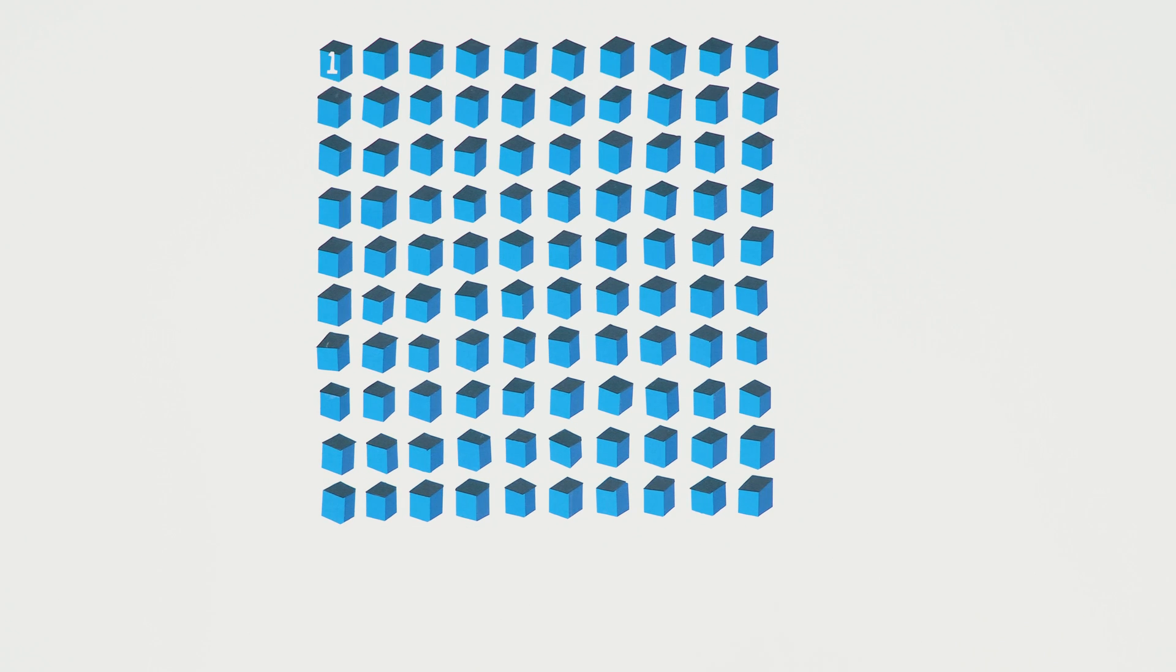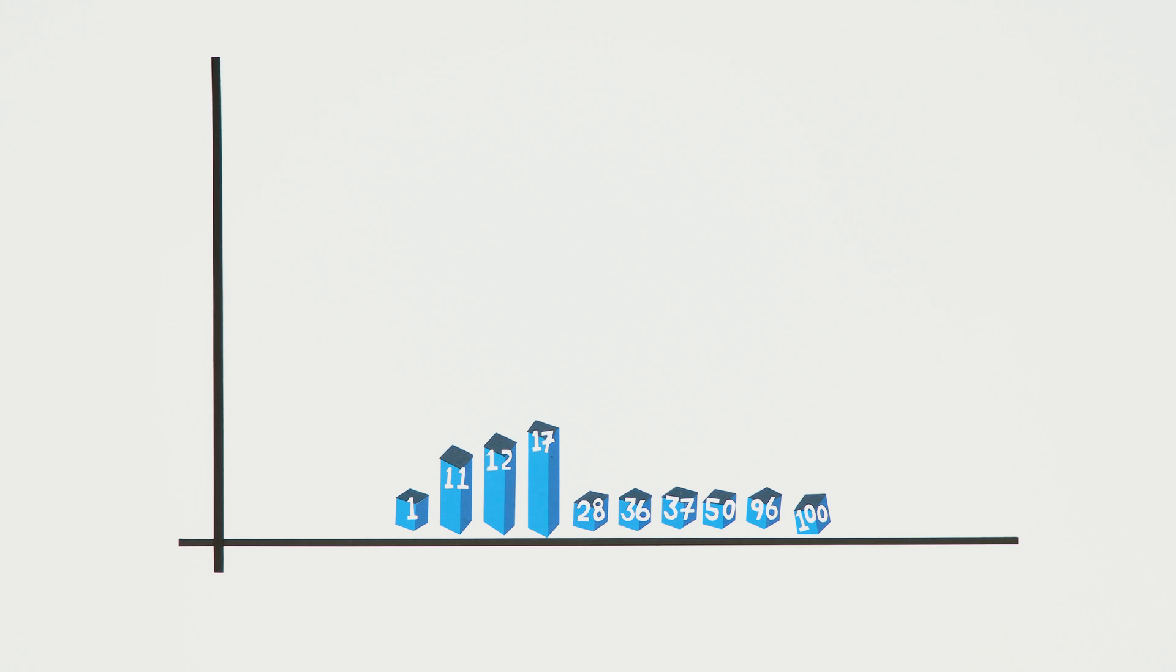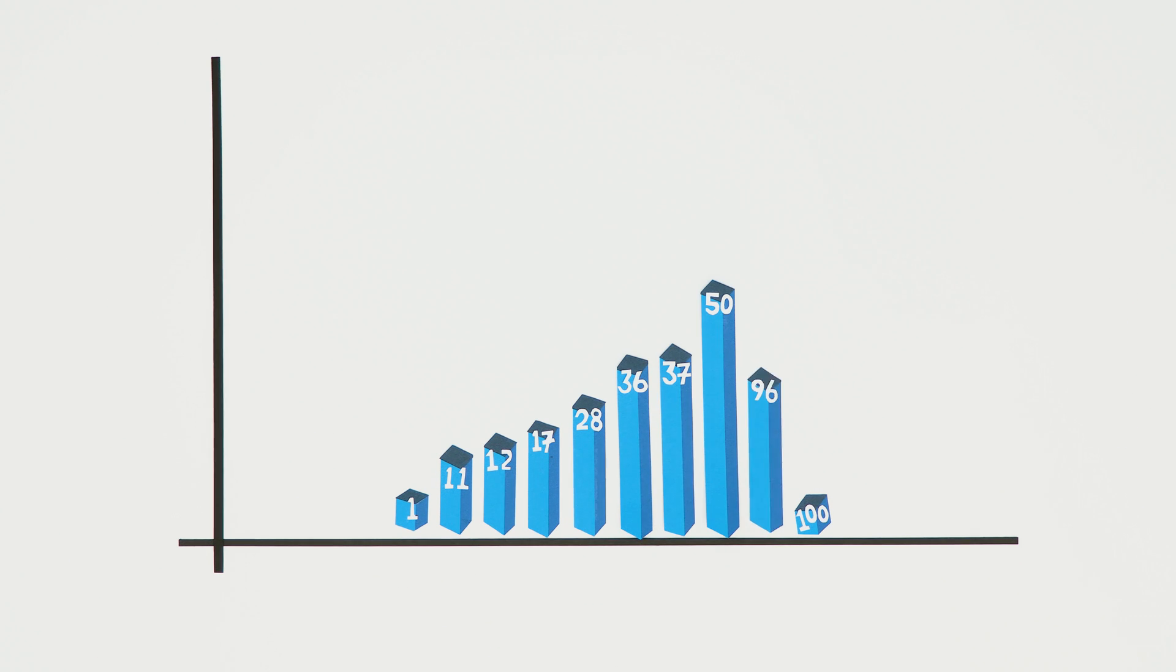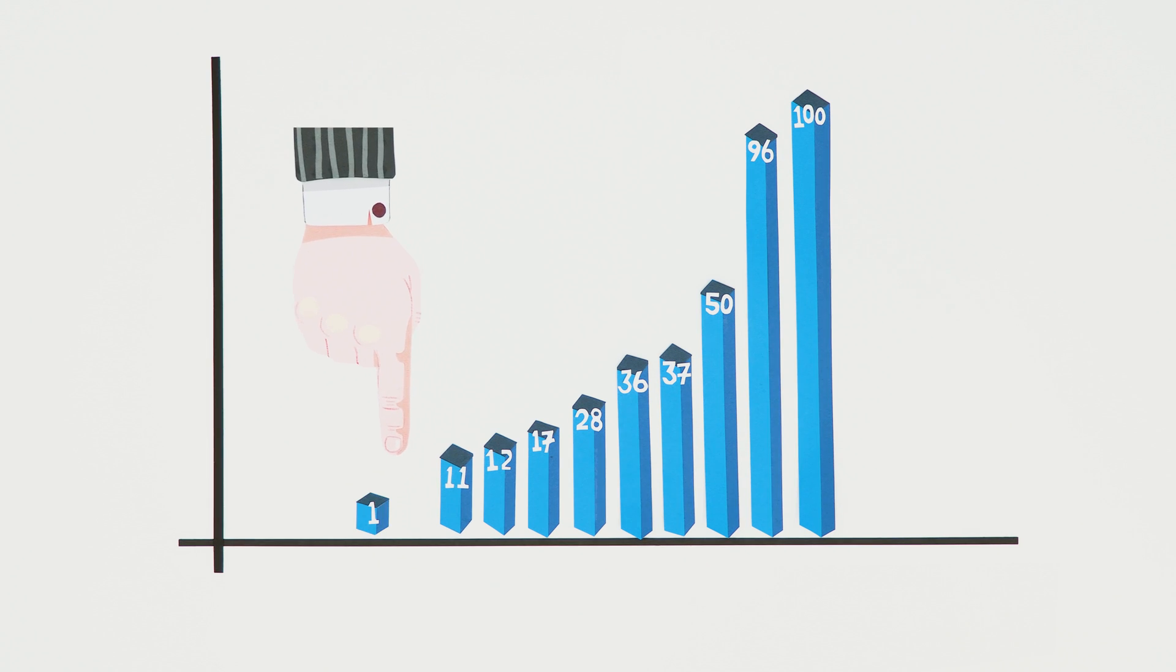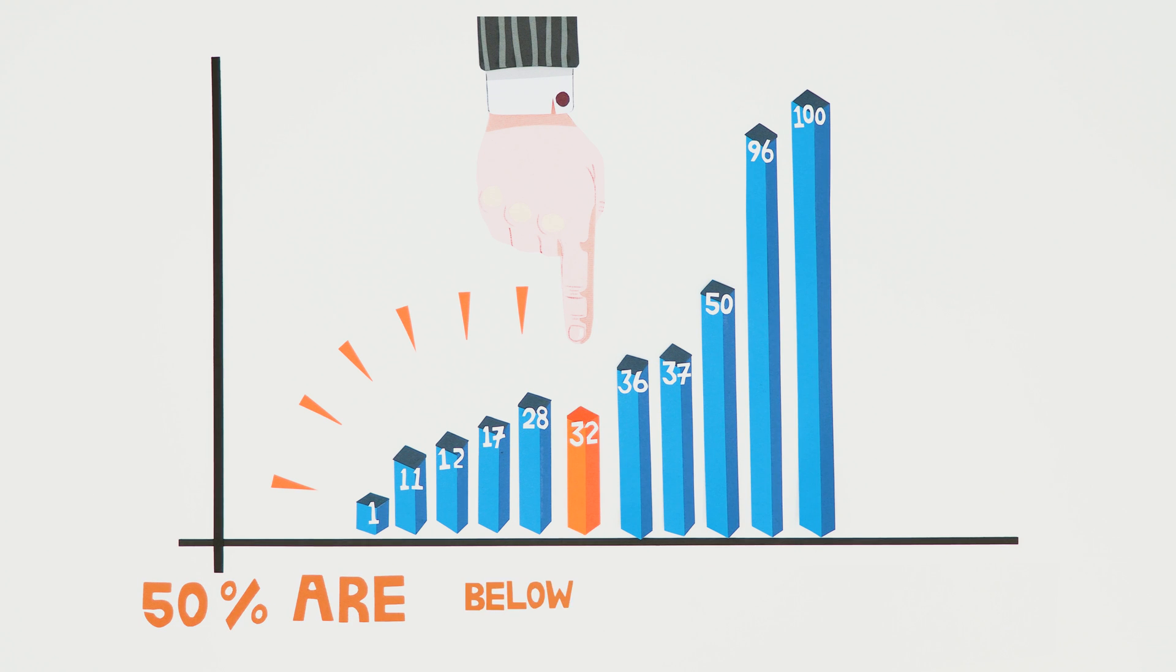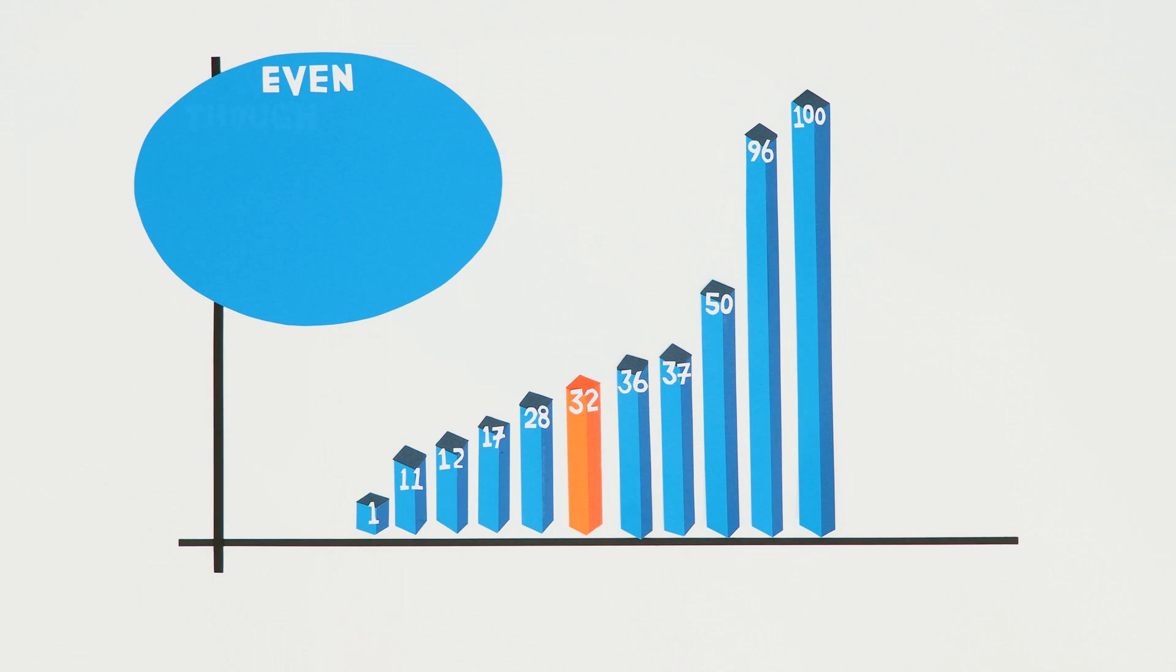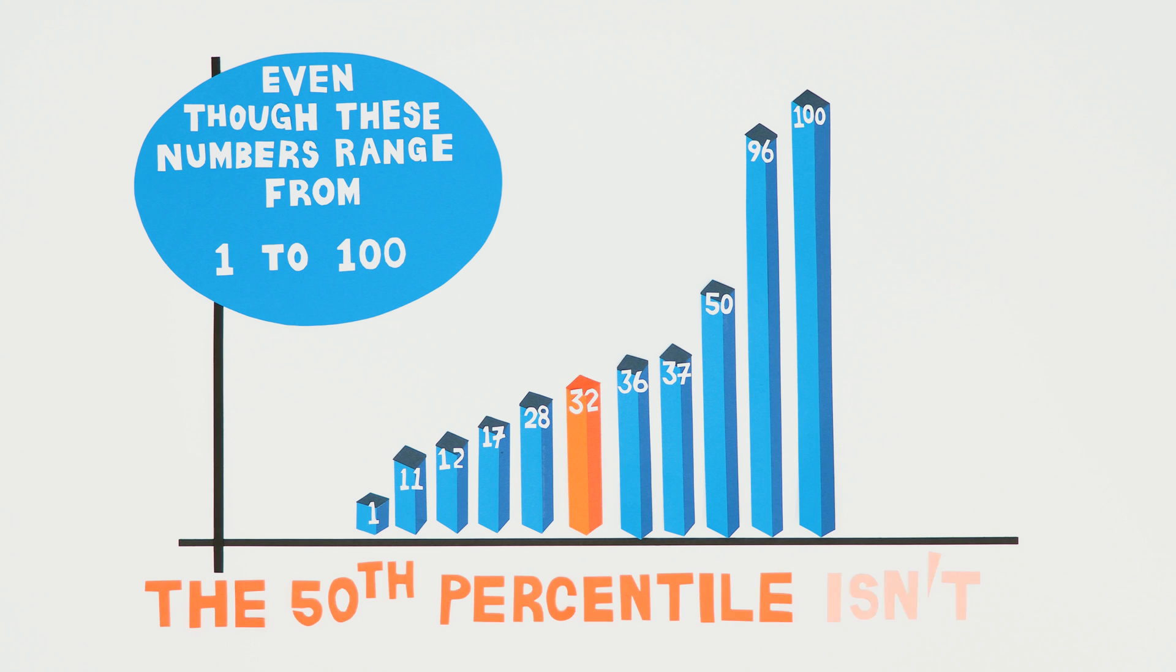Let's say you have a set of 10 measurements and put them in order from lowest to highest. Because we have an even number of data points, the 50th percentile will be the midpoint between the two middle values, which in our data set are 28 and 36. So this will be 32, because 50 percent of your measurements are either equal to or below that number. Which is why, even though these numbers range from 1 to 100, the 50th percentile isn't 50.